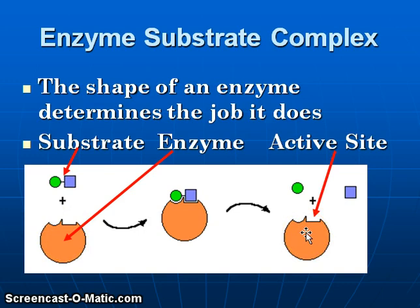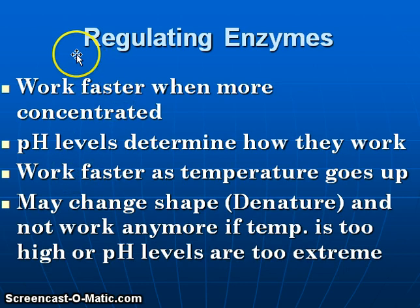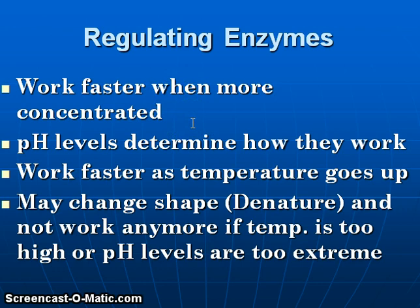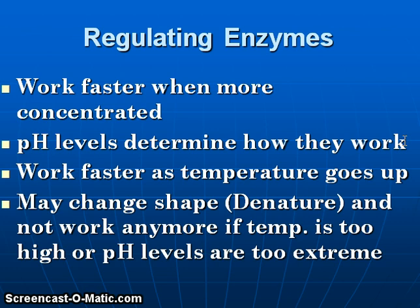This means that this particular enzyme could be used over and over again — many, many times. The speed at which enzymes function can be regulated in several different ways. One way to have an enzyme work more quickly is to have more of the enzymes present — they will work faster if they are more concentrated. pH levels can also determine how enzymes will work. Most enzymes are going to work within a relatively small pH range, perhaps a pH of 6 to 8, where most enzymes work best. Other enzymes may work better in an acidic environment, such as enzymes in the digestive system exposed to stomach acid.